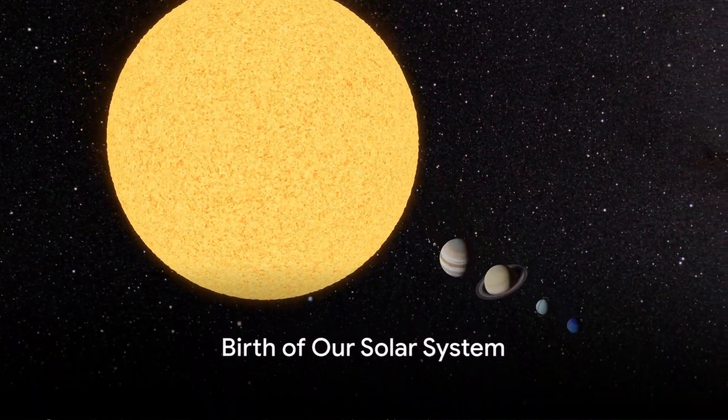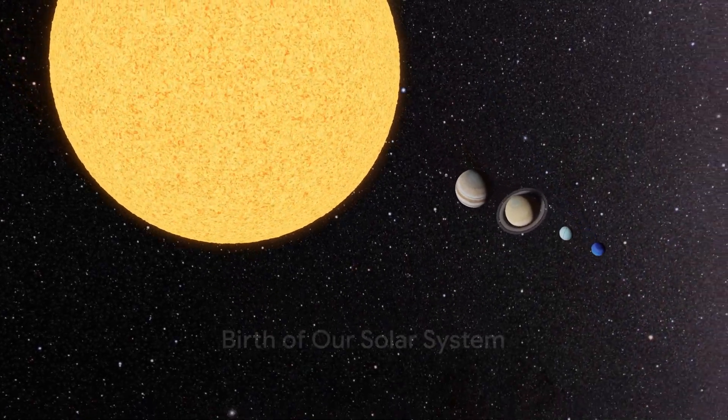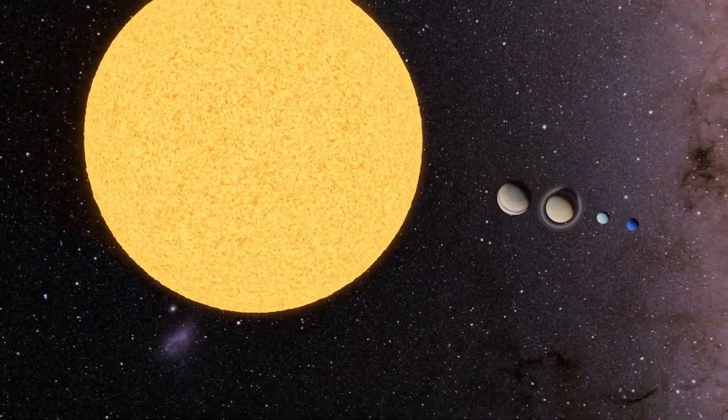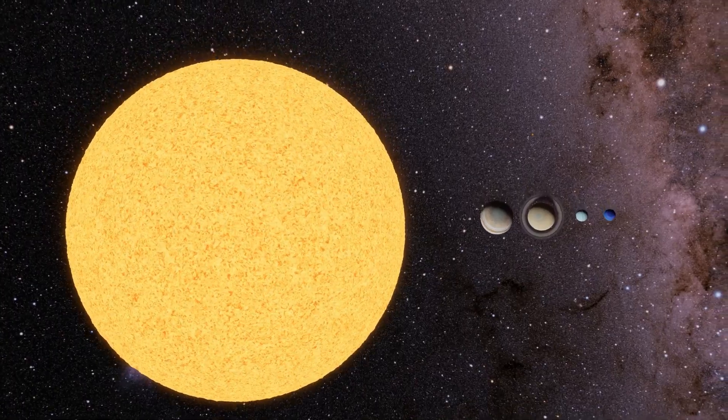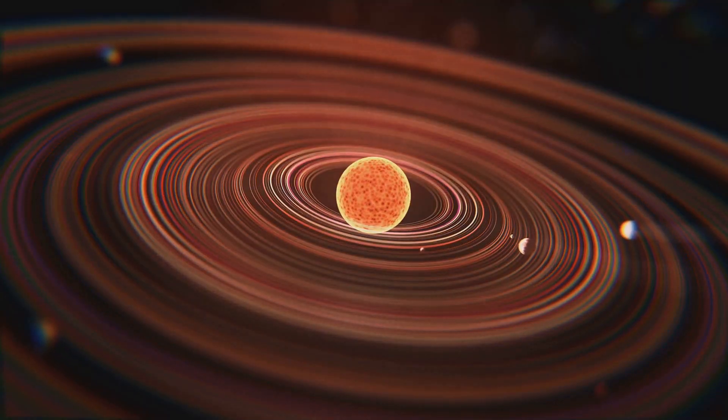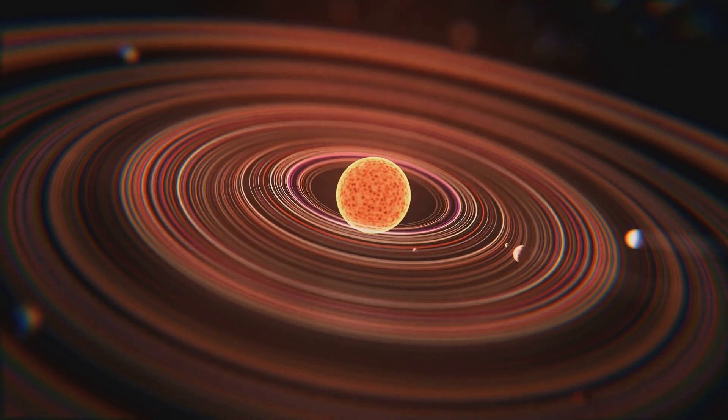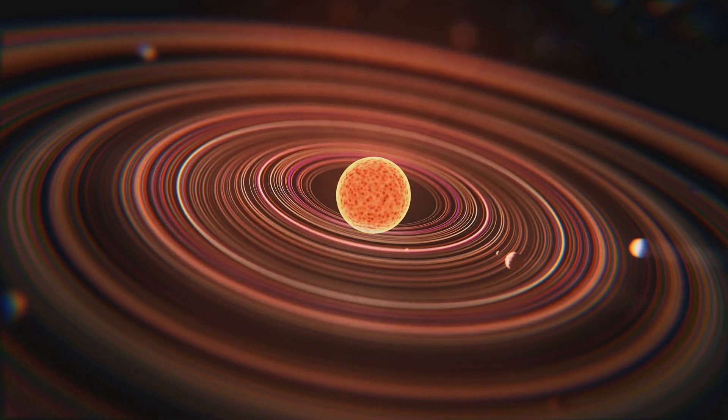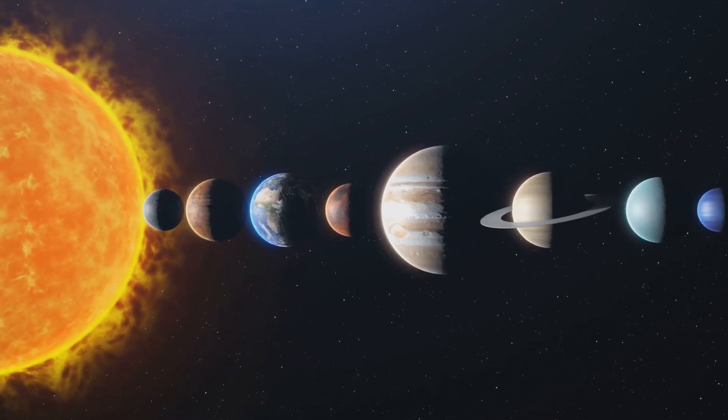Fast forward to about 4.6 billion years ago, our solar system began to form in a region of the Milky Way galaxy. Within a vast cloud of gas and dust, small pockets began to collapse under their own gravity. One of these pockets eventually formed our sun.